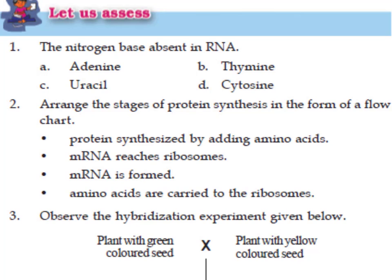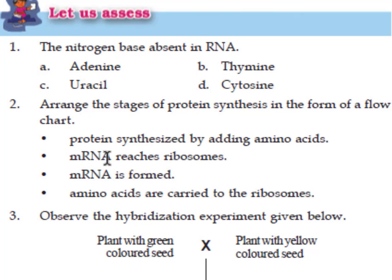Second question: arrange the stages of protein synthesis in the form of a flowchart. First, mRNA is formed from DNA. Second, mRNA reaches the ribosome. Third, amino acids are carried to the ribosome. The last step is protein is synthesized by adding amino acids.